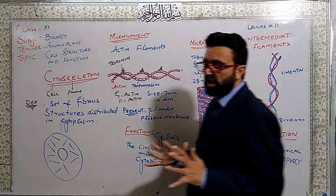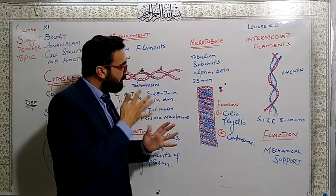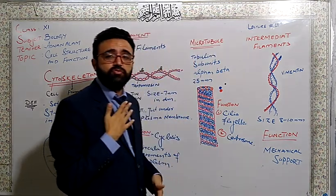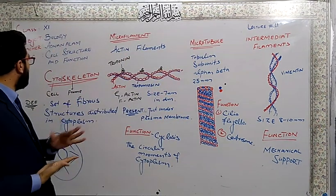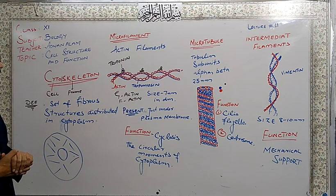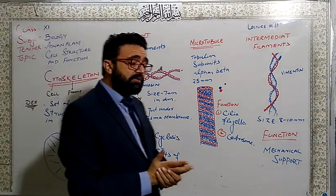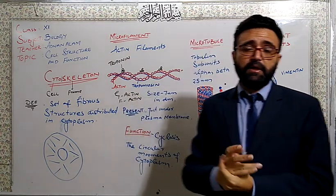The next one is intermediate filament. The intermediate filament consists of three helical chains and these helical chains are of another protein which is called keratin. The size is 8 to 10 nanometers, means more than microfilament and less than microtubules. Their main function - they are scattered and make a network in such a way they provide mechanical support to the cell.